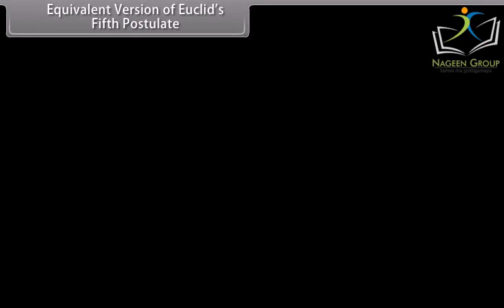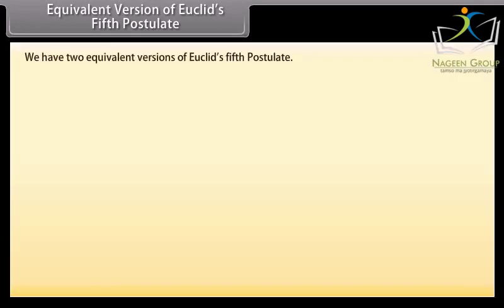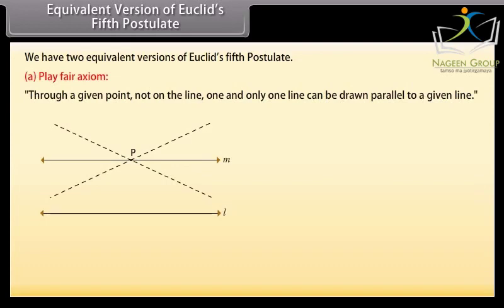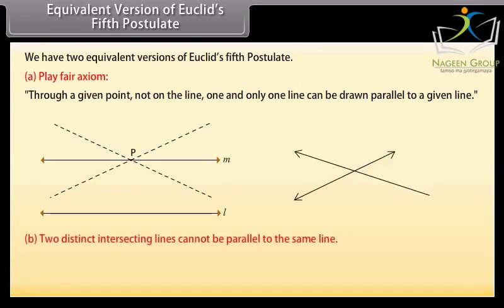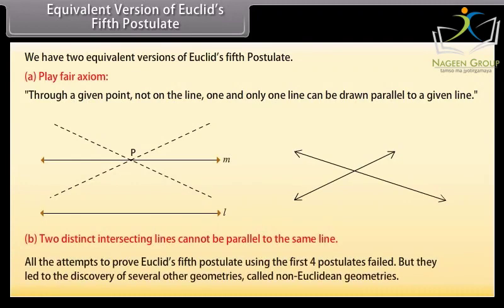Equivalent versions of Euclid's fifth postulate. We have two equivalent versions of Euclid's fifth postulate. The first one is Playfair axiom. This says that through a given point not on the line, one and only one line can be drawn parallel to a given line. And the other one is: two distinct intersecting lines cannot be parallel to the same line. All the attempts to prove Euclid's fifth postulate using the first four postulates failed, but they led to the discovery of several other geometries called non-Euclidean geometries.